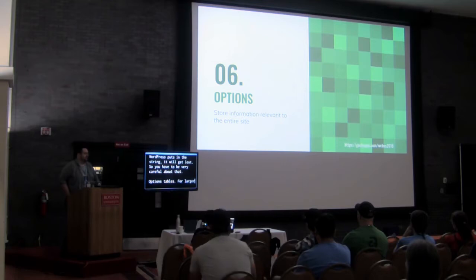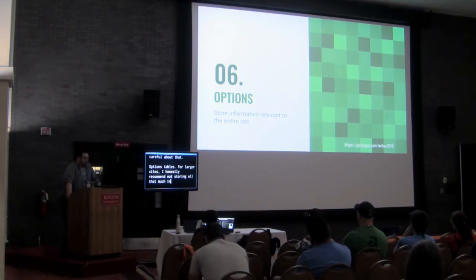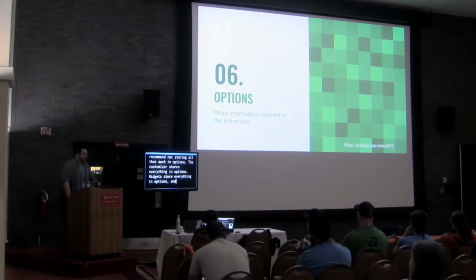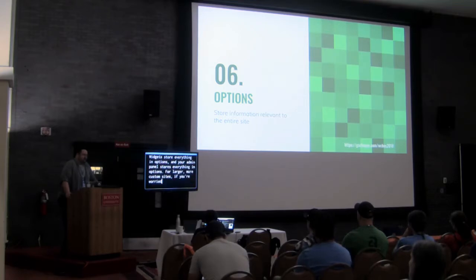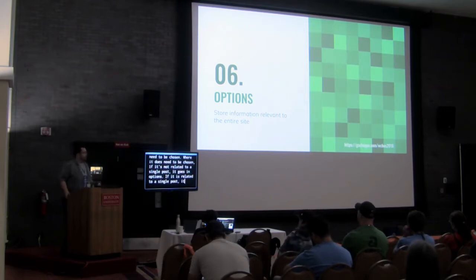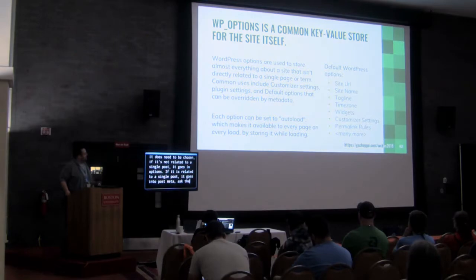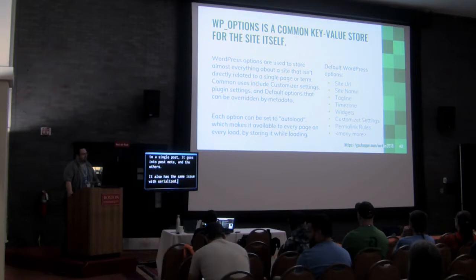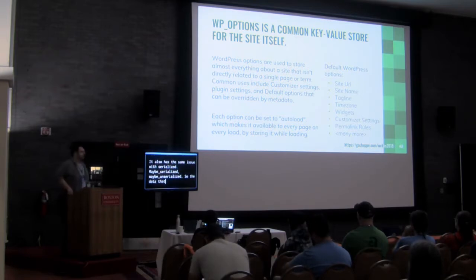For larger sites, I honestly recommend not storing too much in the options table. The customizer stores everything in options, widgets store everything in options, and your admin panel stores everything in options. For larger, more custom sites worried about performance, a lot of that stuff can be hard-coded. Where it does need to be chosen: if it's not related to a single post, it goes in options; if it is related to a single post, it goes in post meta. It also has the same serialization issue — your data goes in, it may not be the same as it comes out. Be careful about how complex the data is in the options table.